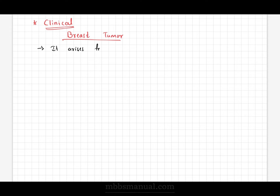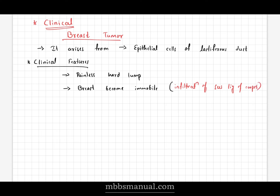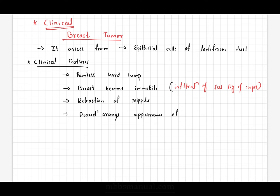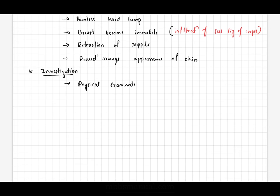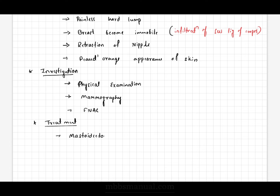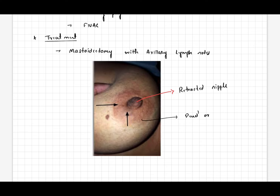Clinical aspects of the mammary gland — carcinoma of the breast: it is the most common cancer in females. It arises from epithelial cells of the lactiferous ducts. Clinical features include presence of a painless hard lump, breast becoming fixed and immobile due to infiltration of suspensory ligaments, retraction of skin and nipple due to infiltration of the suspensory ligament, and peau d'orange appearance of skin due to obstruction of superficial lymphatics. Investigation includes physical examination, mammography, and FNAC. Treatment is mastectomy with axillary lymph node removal. The picture shows a retracted nipple and orange-like appearance of the skin.